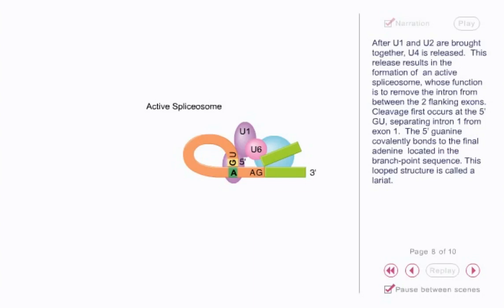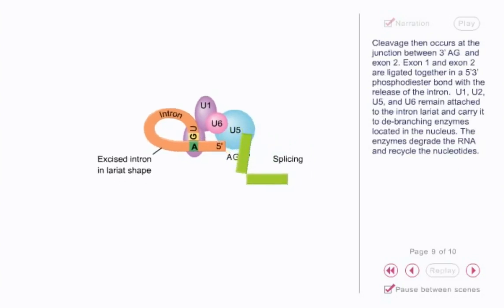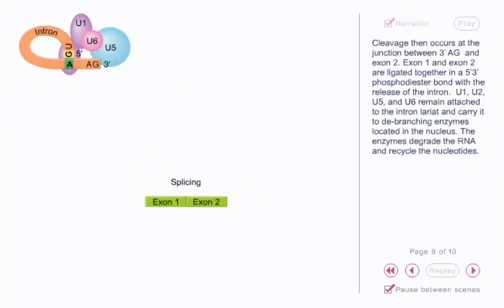The 5' guanine covalently bonds to the final adenine located in the branch point sequence. This looped structure is called a lariat. Cleavage then occurs at the junction between 3' AG and exon 2. Exon 1 and exon 2 are ligated together in a 5' to 3' phosphodiester bond with the release of the intron.